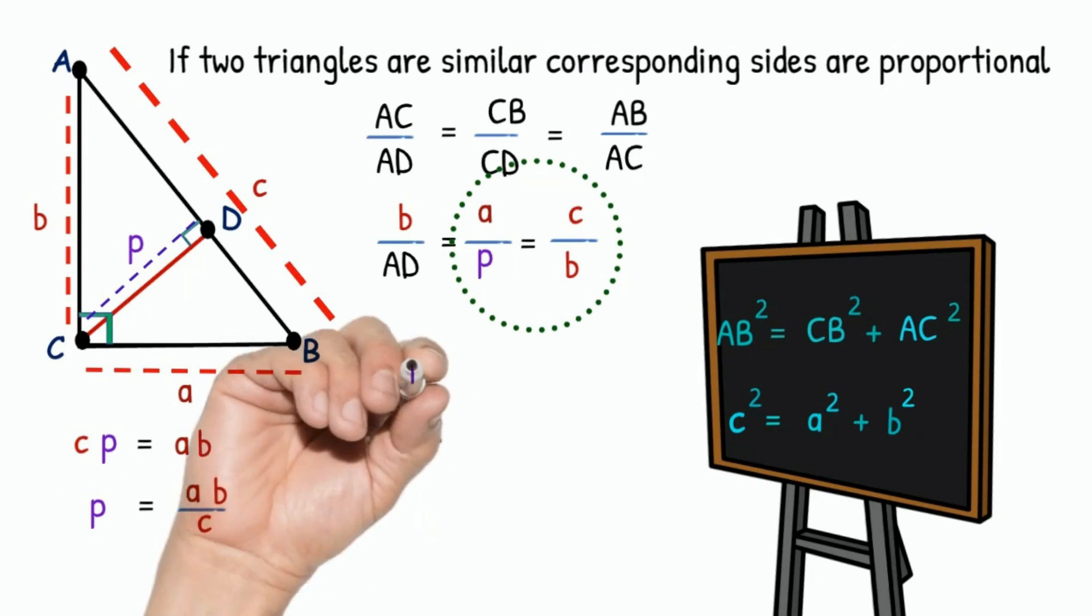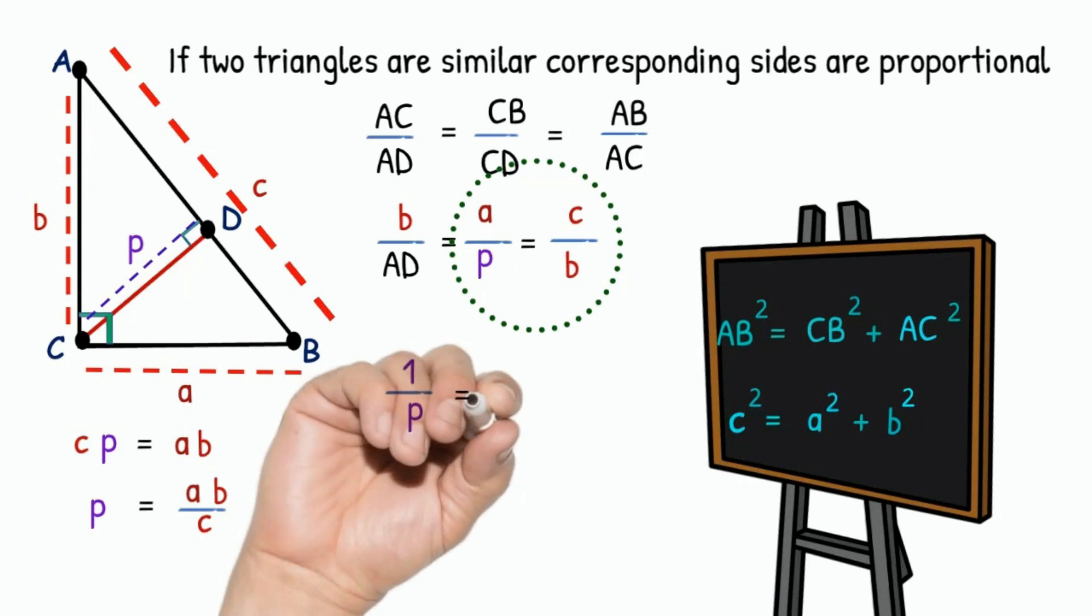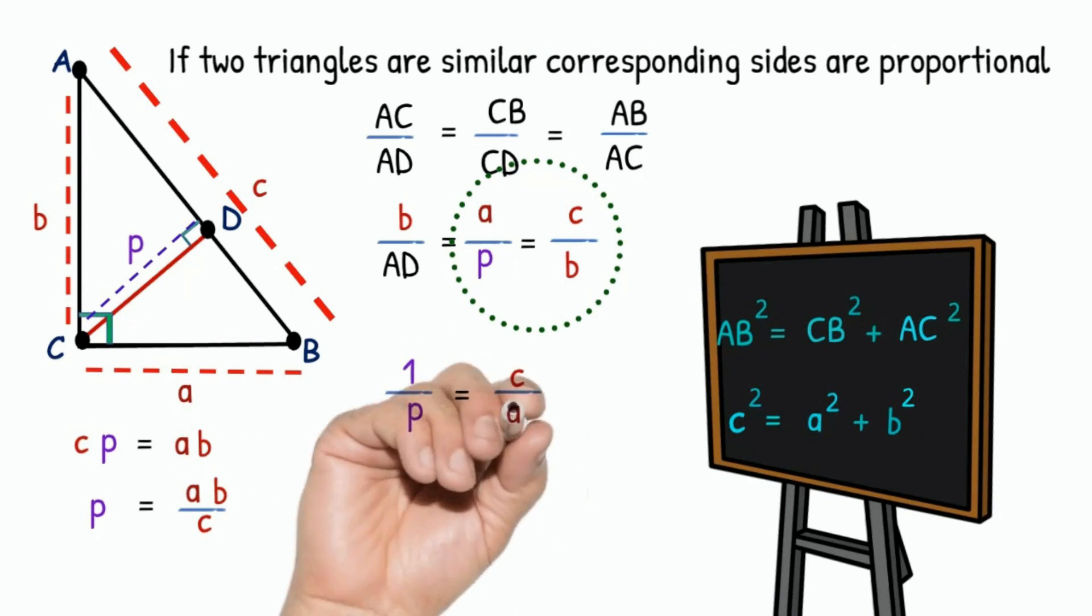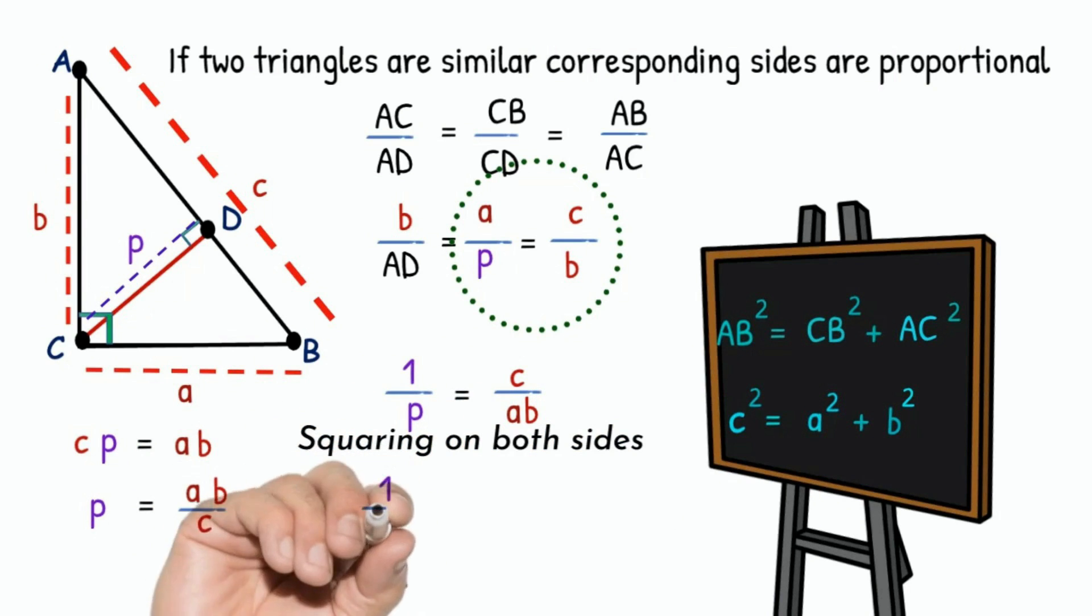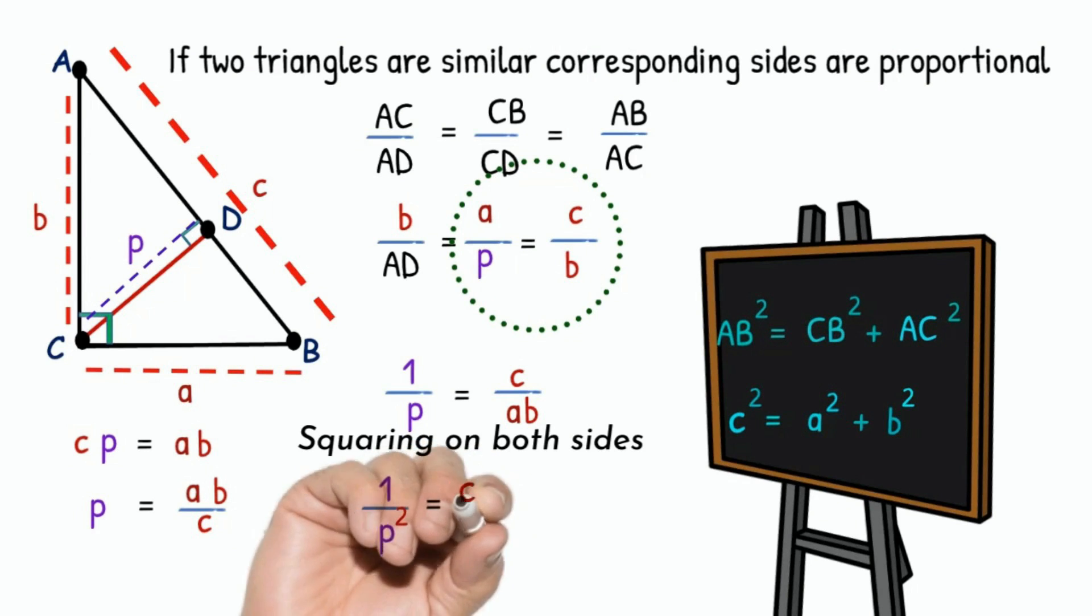Take reciprocals: 1 divided by P equals C divided by AB. Then squaring on both sides, 1 by P square equals C squared divided by A square B square.